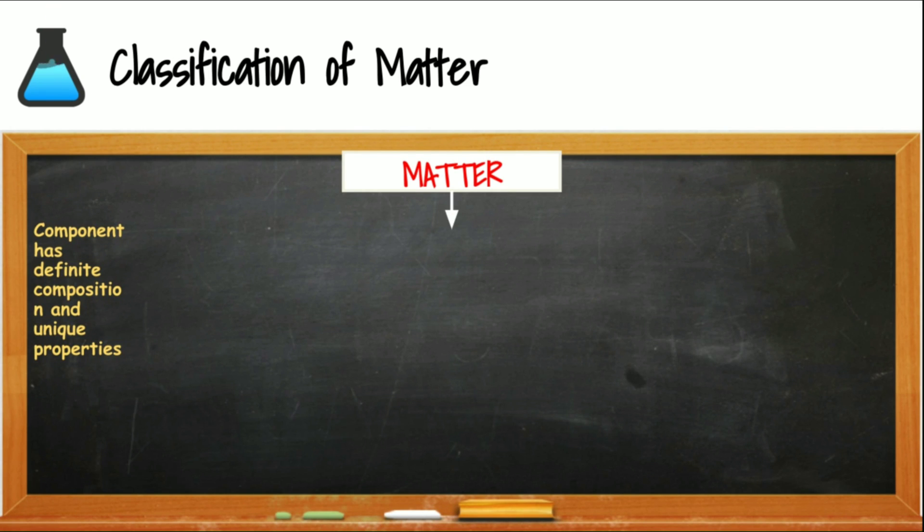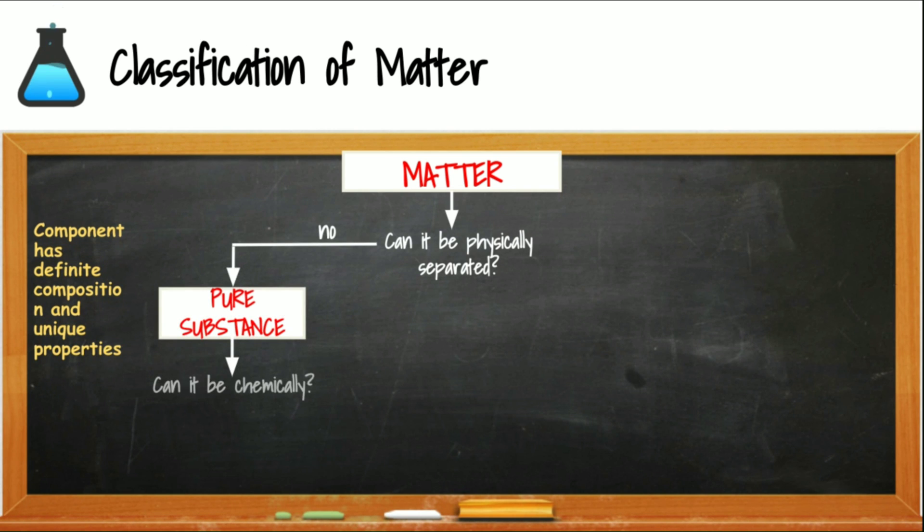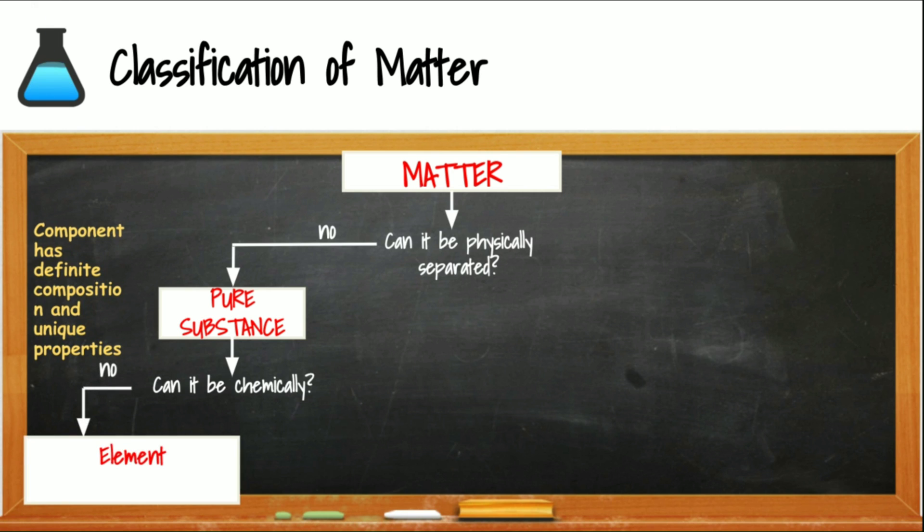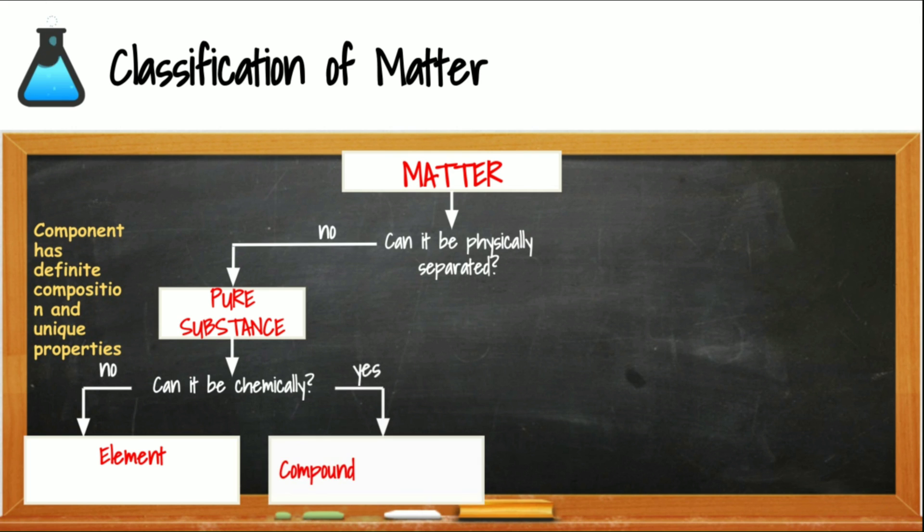As a review from our last lesson, we know that matter can be classified as a pure substance or a mixture. We're still going to be looking at pure substances. Pure substances cannot be physically separated because they are held together by bonds. Pure substances that are held together by bonds are compounds, and pure substances that are as simple as possible are elements.